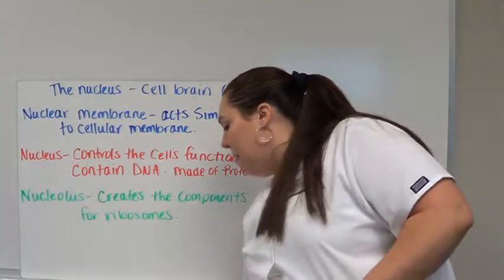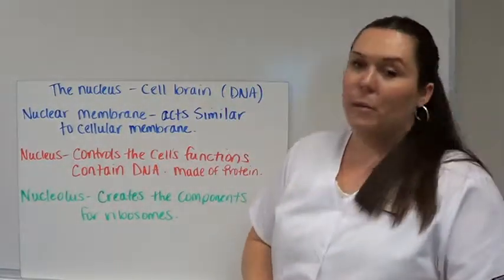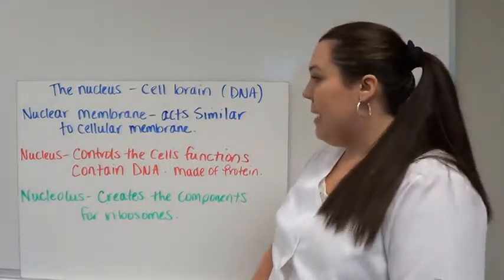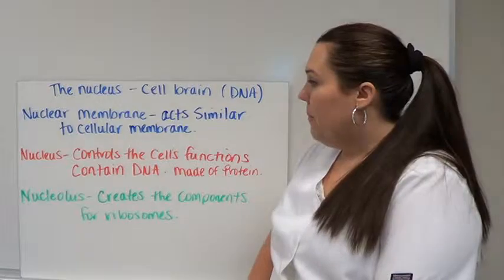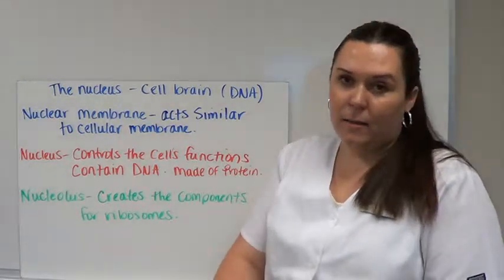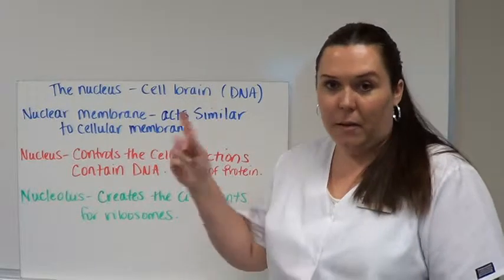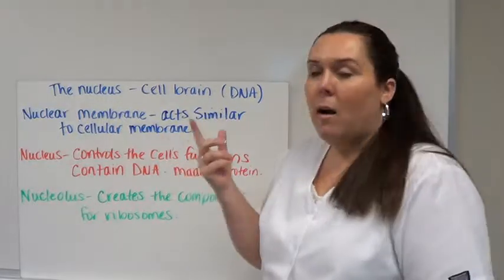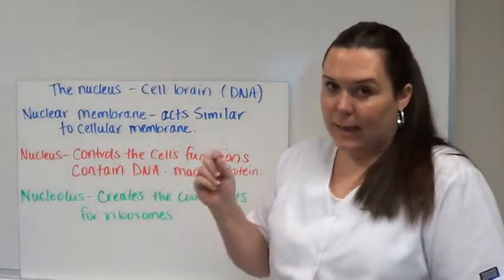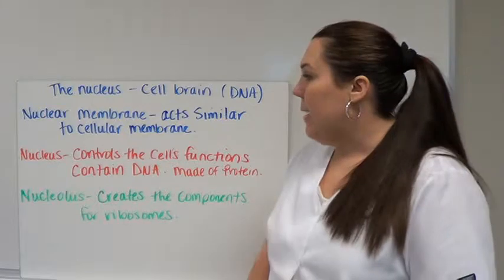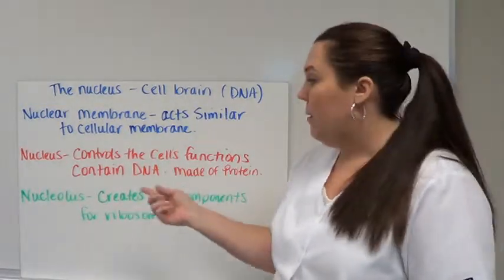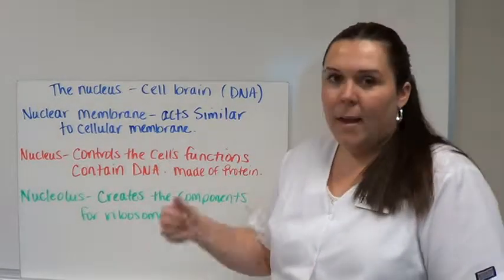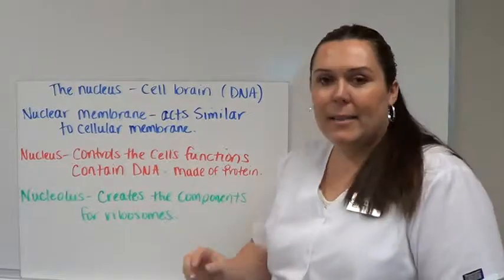The next organelle is the most important one, the nucleus. The nucleus is the brain of the cell. It contains DNA. There is a nuclear membrane around the nucleus. It's very similar to the cellular membrane on the outside with semi-selective permeability and receptor sites that allow certain chemicals within. The nucleus controls the cell's function, just like a brain in a human. It contains the DNA.